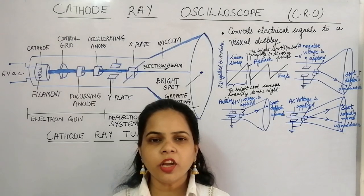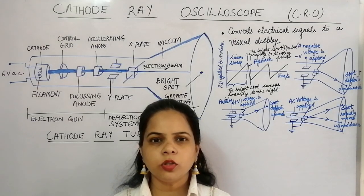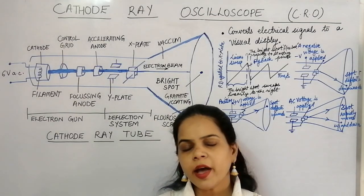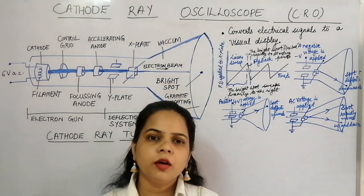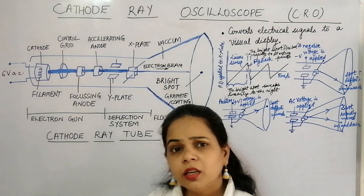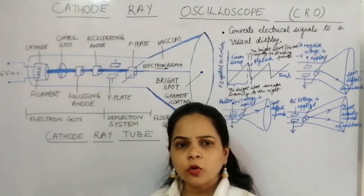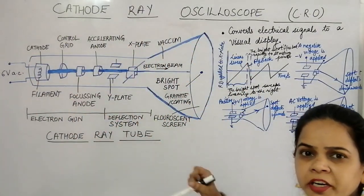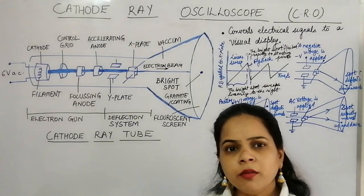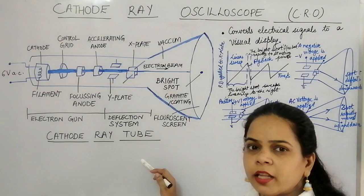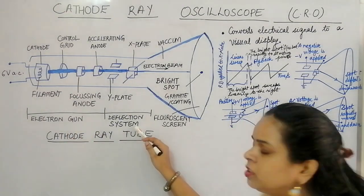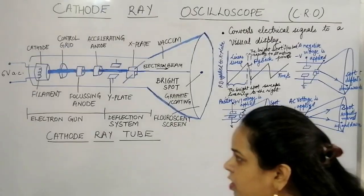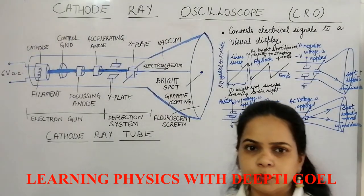Today we are going to discuss the cathode ray oscilloscope, also known as CRO. The CRO finds a large number of applications in practical labs. It consists of a highly evacuated cathode ray tube. The three main parts of the cathode ray tube are the electron gun, the deflecting system, and the fluorescent screen.